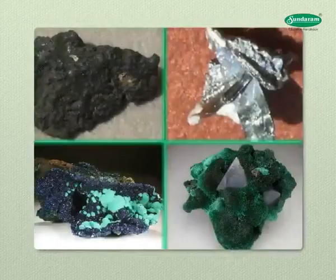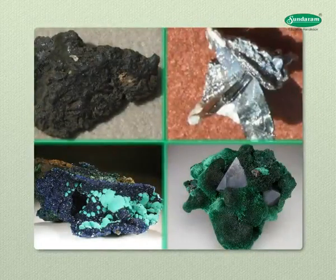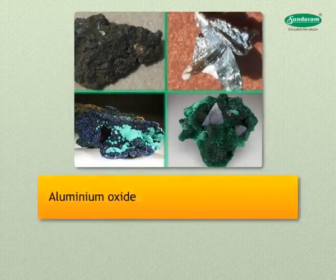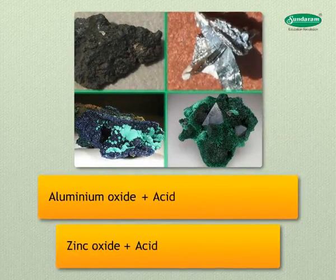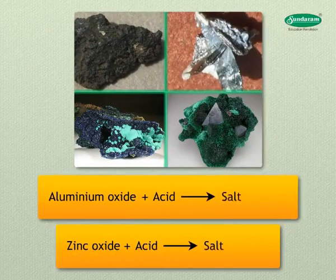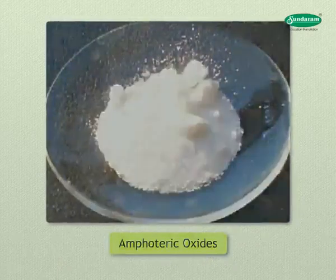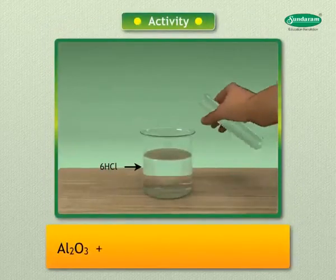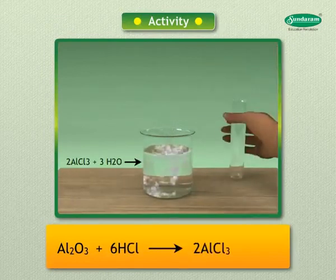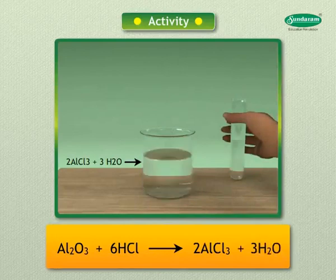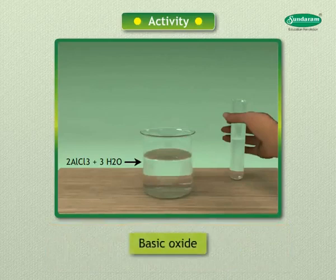Metal oxides are usually basic in nature, but some metal oxides such as aluminium oxide and zinc oxide react with both acids and bases to produce salt and water; hence they are called amphoteric oxides. Al₂O₃ + 6HCl → 2AlCl₃ + 3H₂O — aluminium oxide reacts with acid to form salt and water, so it behaves as a basic oxide.